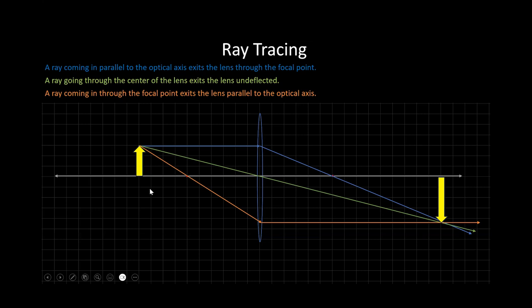So here, what we have is a real image, inverted and magnified. If this is 3 units, this is 4.5 units. Again, absolute value. It's one and a half times as large as that one. So, this is great.